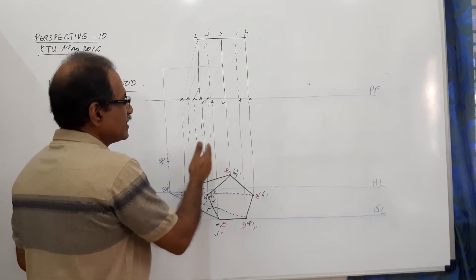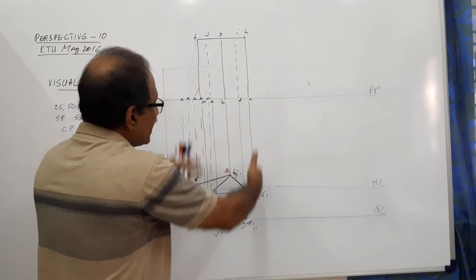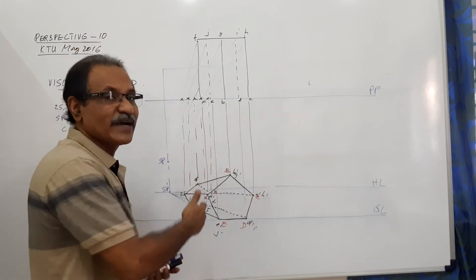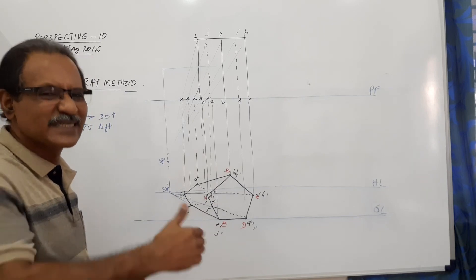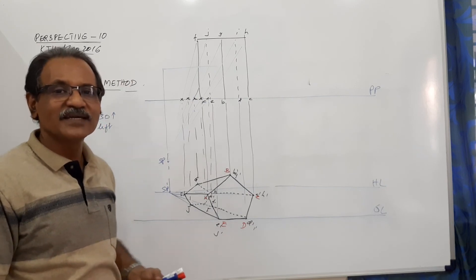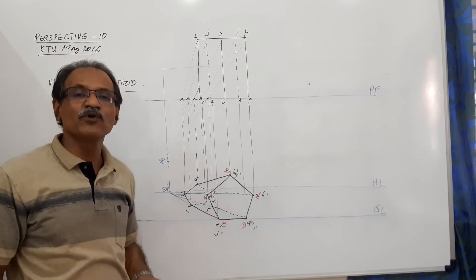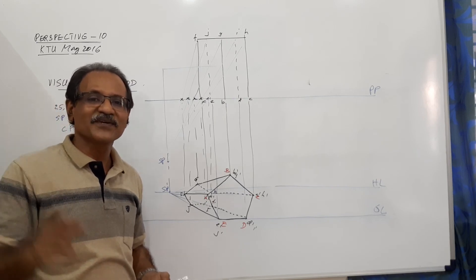But, if the station point comes nearer to this area, it is not very wise to go for visual ray method. You may have to go for mixing up the two methods. I hope you understood. This question is extremely important. This has repeatedly come for all universities. Thank you.